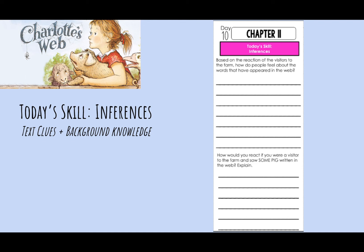In today's chapter you are going to make some inferences. On your trifold for day ten, chapter eleven, you have two questions. The first question is: based on the reaction of the visitors to the farm, how do people feel about the words that have appeared in the web? Author E.B. White is not going to tell you word for word how they feel — he won't say they feel happy, excited, or sad. Instead, he's going to describe their reactions based on how they act or react to the words they see on the farm. I want you to think about how the people felt based on their reactions.